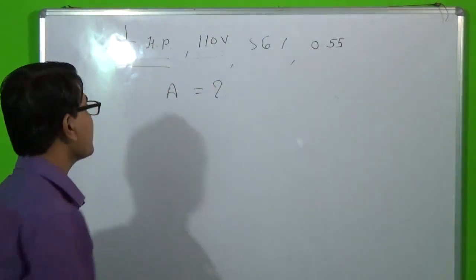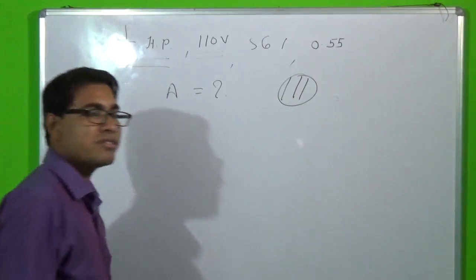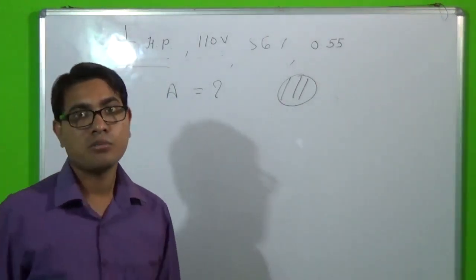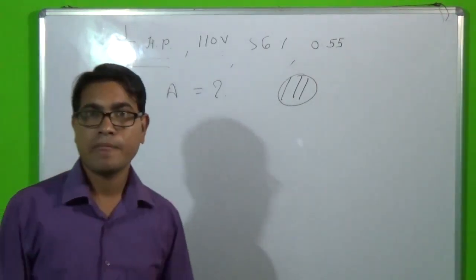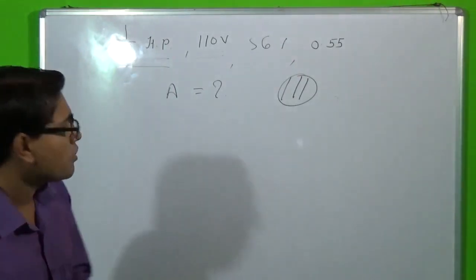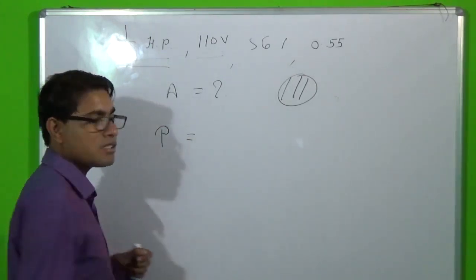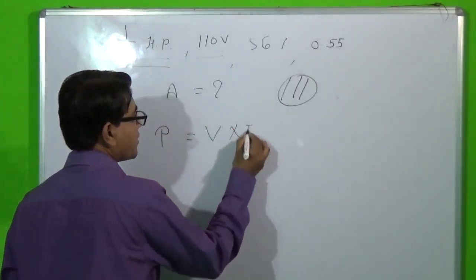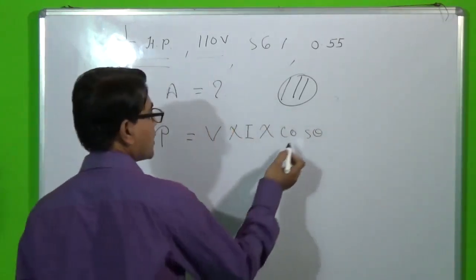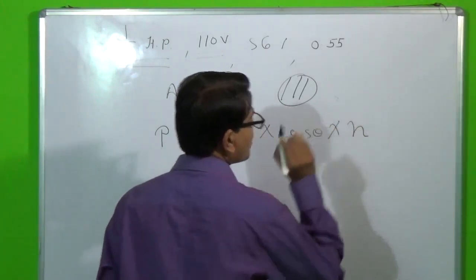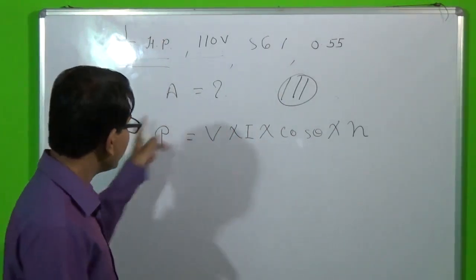Our problem is to find the size of the conductor, or the cross-sectional area of the conductor which we will use to rewind the motor with the given specifications. We know that the power of a machine is given by P = V × I × cos θ, where cos θ is the power factor and η is the efficiency of the motor. The power of any machine is given by that formula.